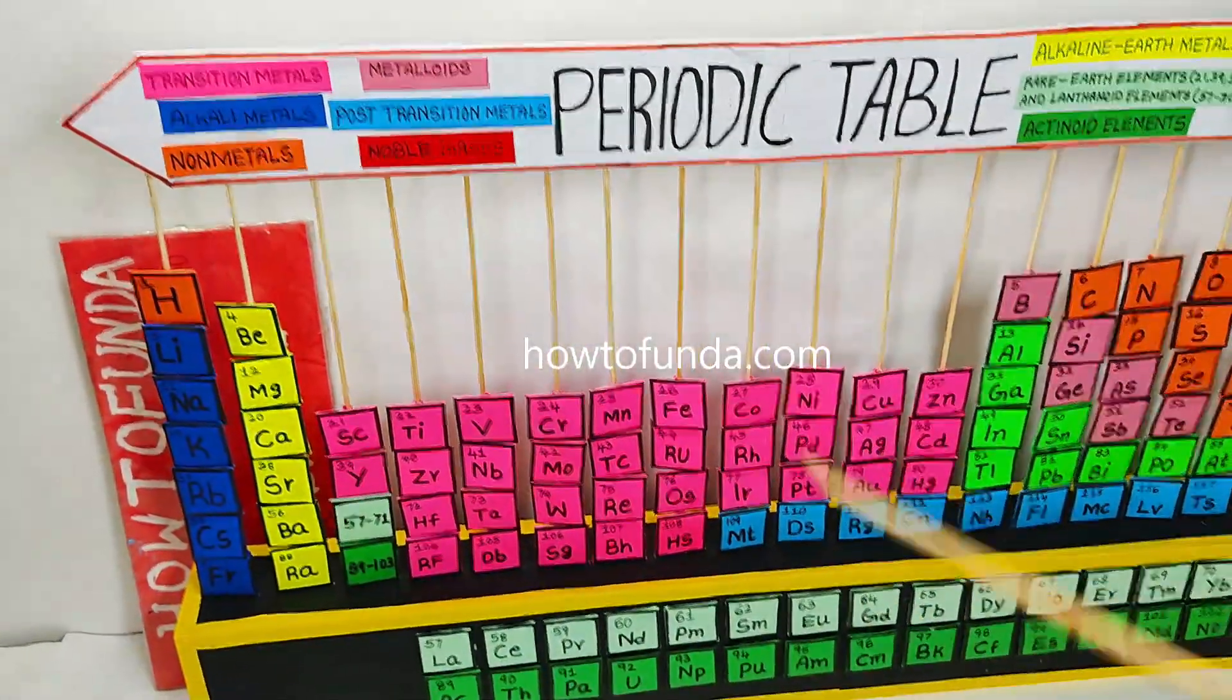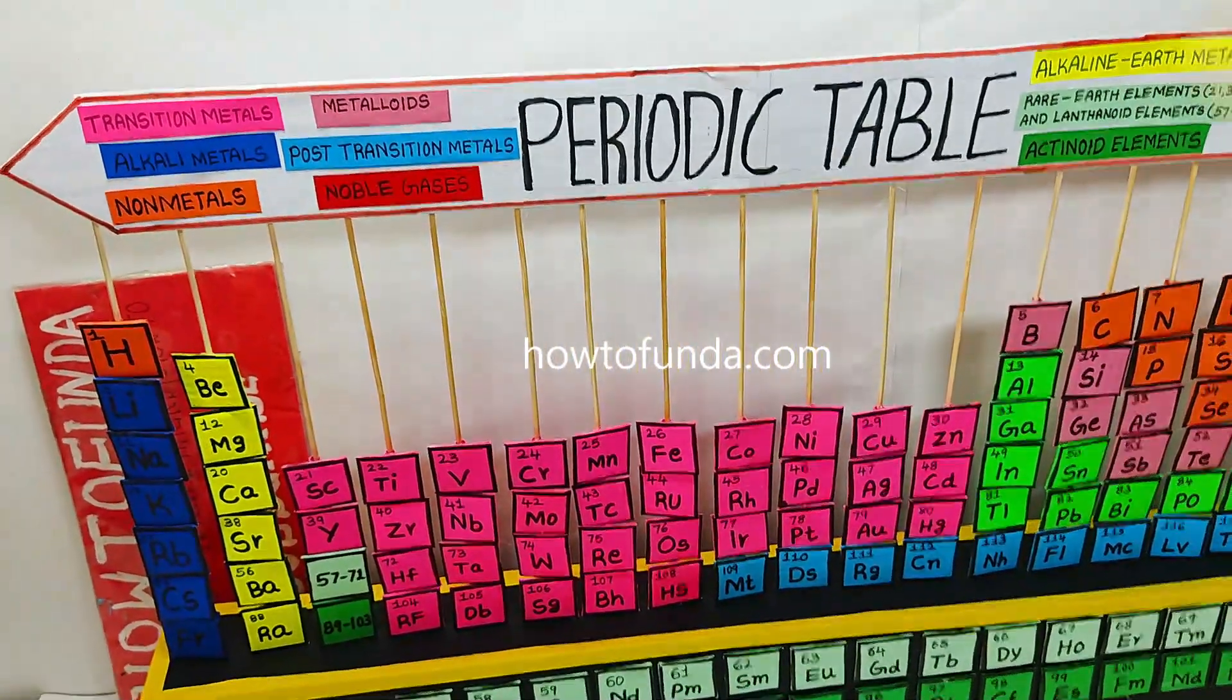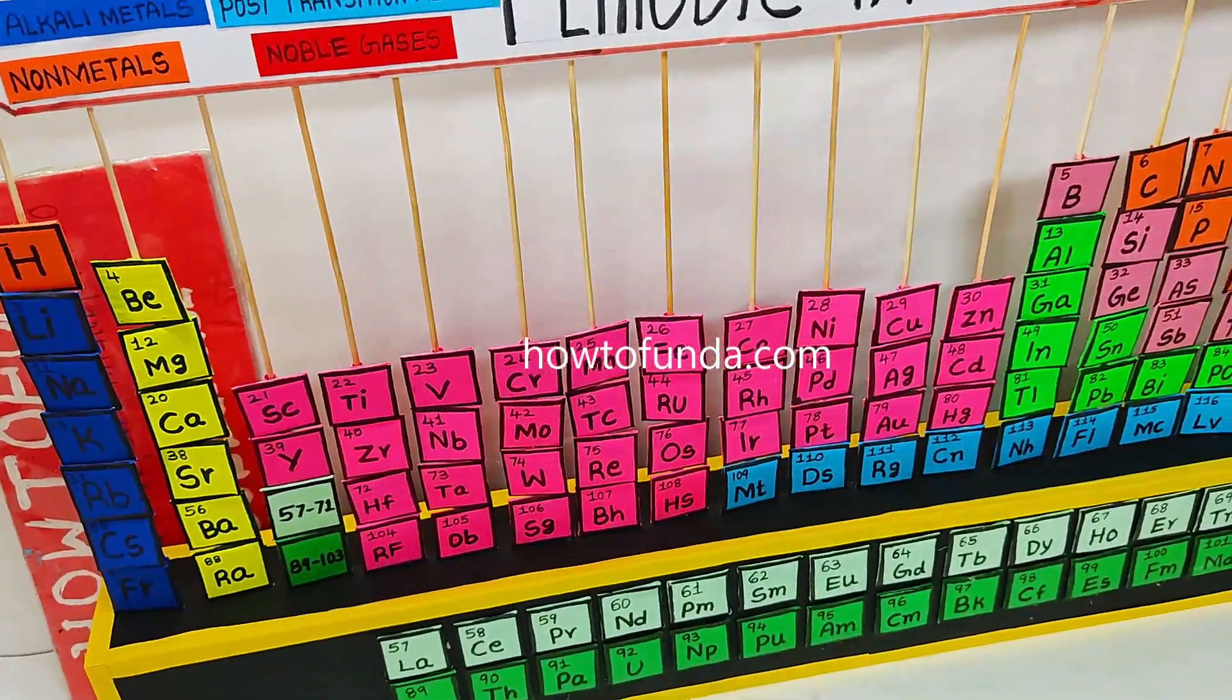If we are looking at this periodic table, it is divided into two sections: one is vertical section, another one is horizontal rows.